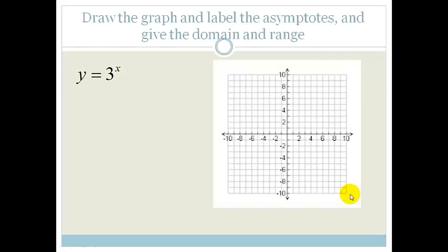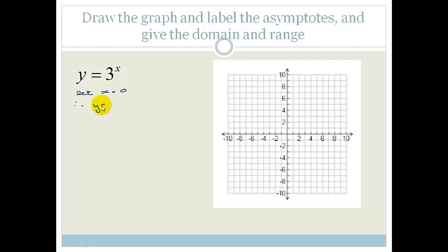Draw the graph and label the asymptotes, and give the domain and range of y equals 3 to the x. This is an exponential graph. What we should remember is that it always goes through 1 on the y-axis unless it's been shifted or messed around with — and this one hasn't. So let's just check: if x equals 0, then y is 3 to the 0, which equals 1. So when x is 0, y is 1.